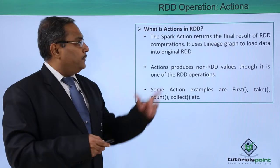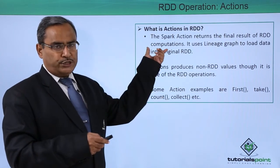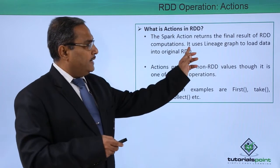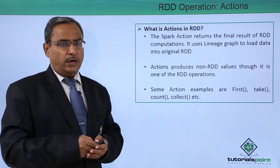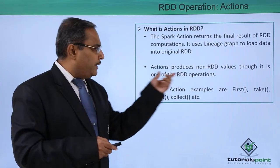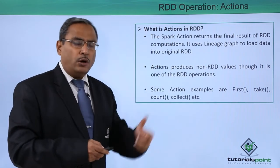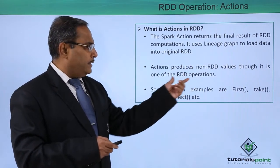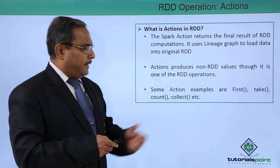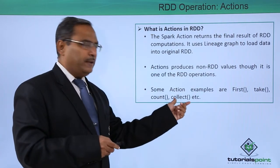What is actions in RDD? The Spark action returns the final result of RDD computation. It will return the final result, but that result is in the non-RDD format, and it uses a lineage graph to load data into the original RDD. Actions produce non-RDD values, though it is one of the RDD operations. Some action examples are: first method, take method, count method, collect method, and so on.